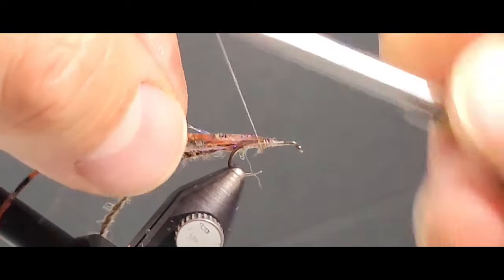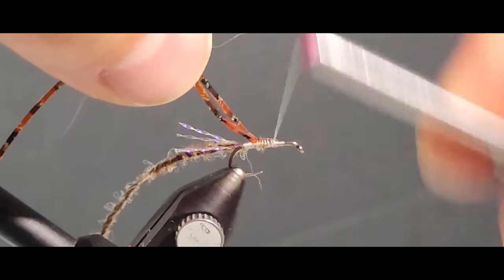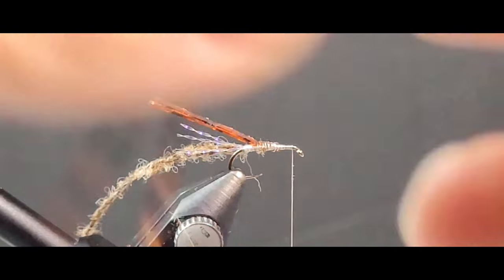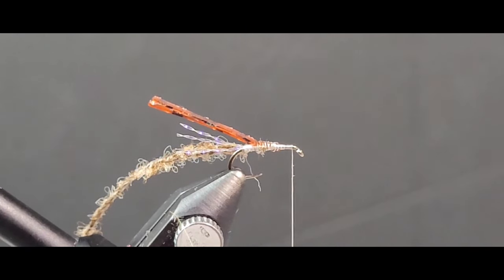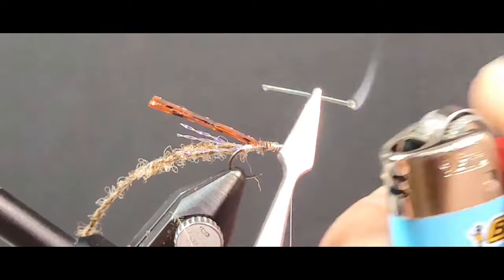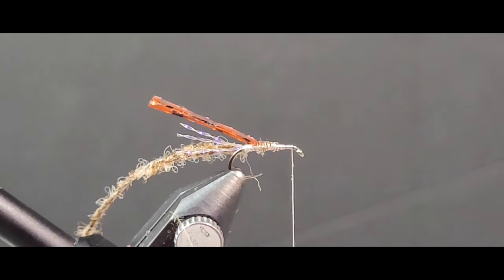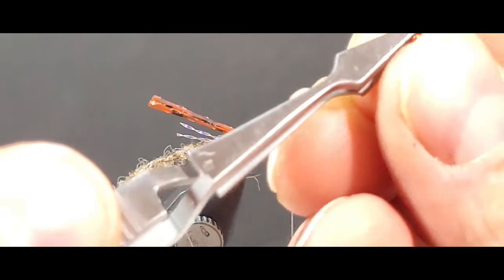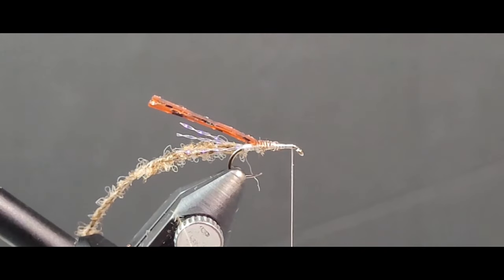As you can see I've just started the Nano Silk and then captured four strands of that Semper Flash. That just imitates as the back swimmers move through the water they create and displace a little bit of water, so the little bit of that pearl crystal flash imitates the disturbance in the water.